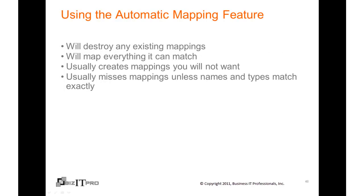As shown in our example, using the automatic mapping feature will destroy existing mappings and map everything it can match. It generally will create mappings you will not want, but you can go back and delete these. It may also miss some mappings unless the names and types match exactly between the two entities.